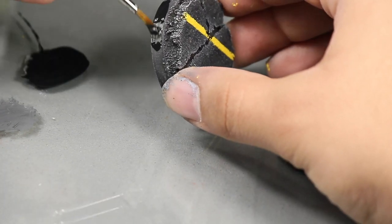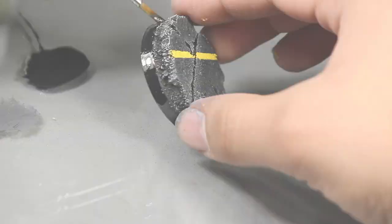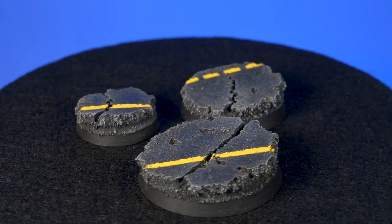The painting is done, the only thing left is to paint the rim of the base black. And there you have three Road Rage bases.